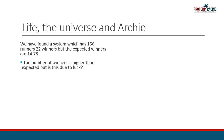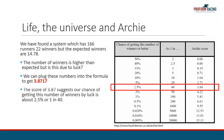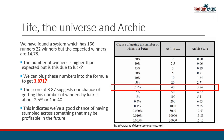Let's look at an example. We have found a system which has 166 runners, 22 winners, but the expected winners are 14.78. The number of winners is higher than expected, but is this due to luck? We can plug these numbers into the formula to get 3.8717. Using the table on the right-hand side, the score of 3.87 suggests our chance of getting this number of winners by luck is about 2.5%, or 1 in 40.